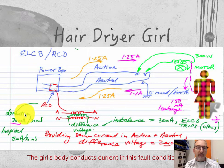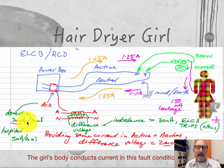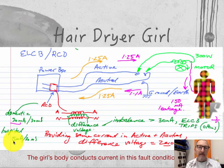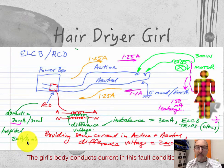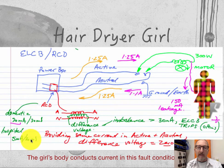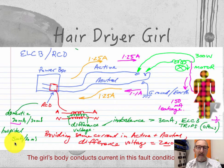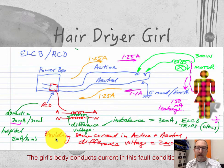In domestic situations, ELCBs trip at 30 milliamps and they trip within 30 milliseconds. In hospital situations, I believe they trip at 5 milliamps within 30 milliseconds — though you'd have to check the AS3000 regulations to confirm that is current.